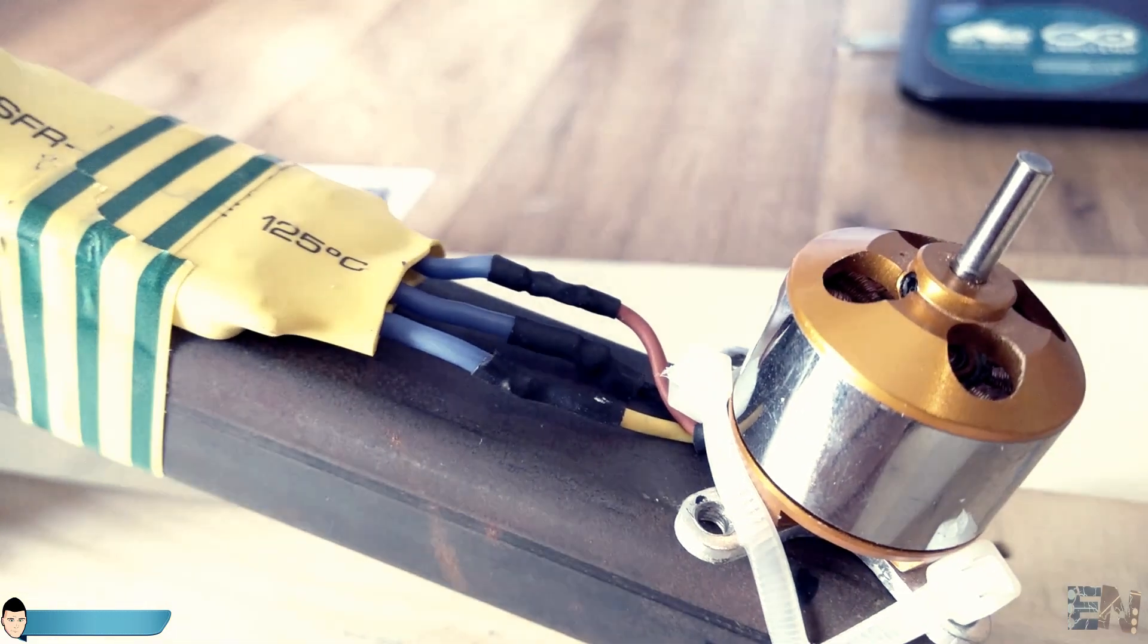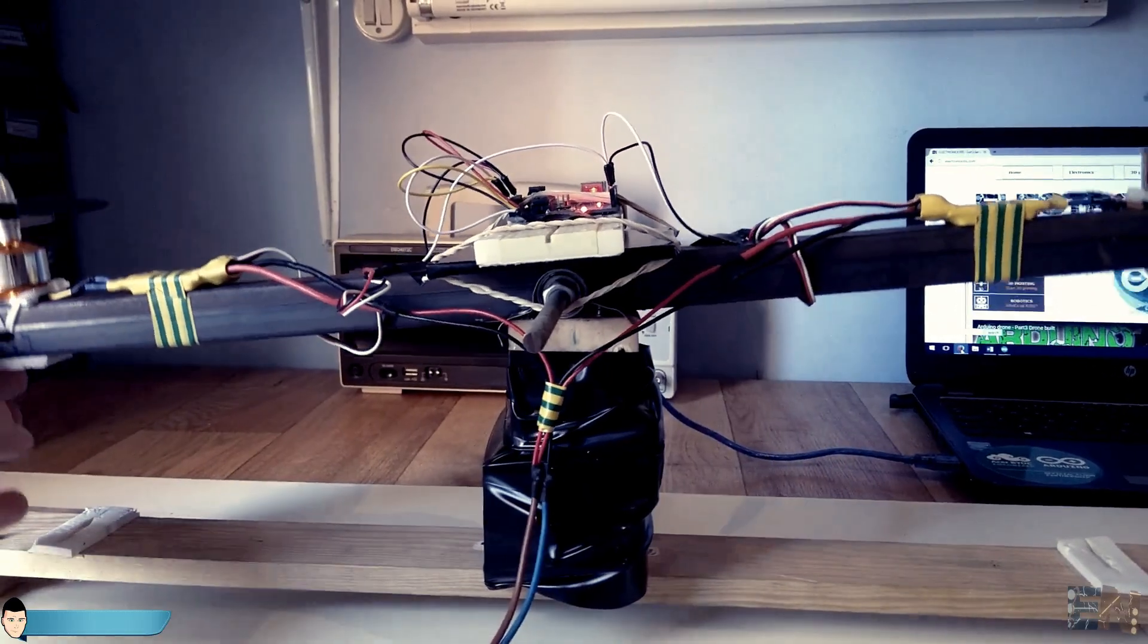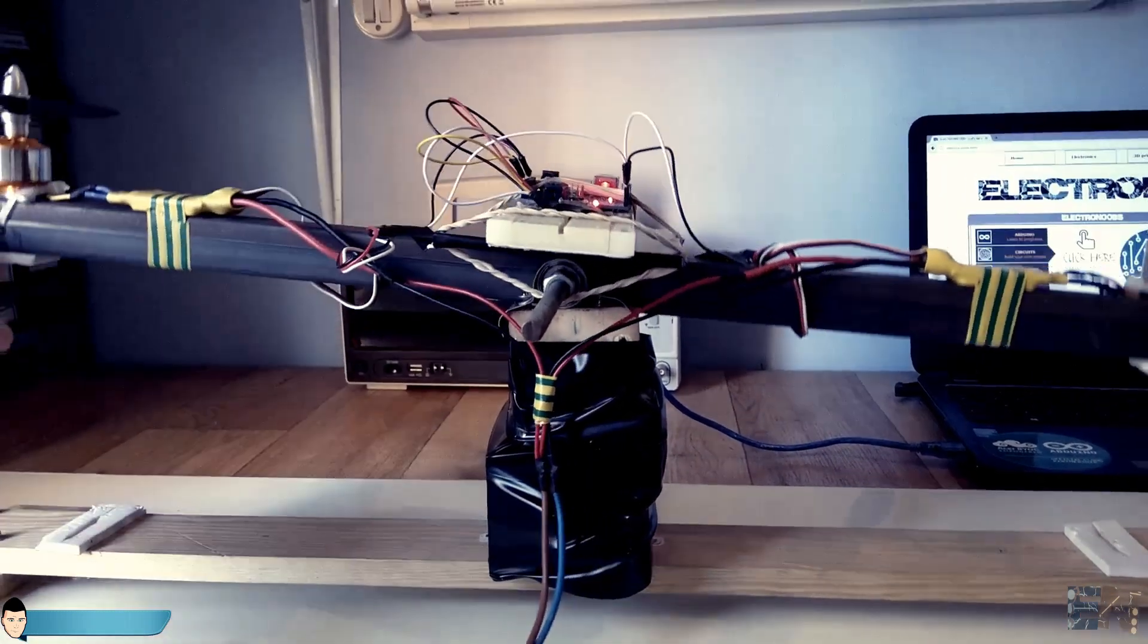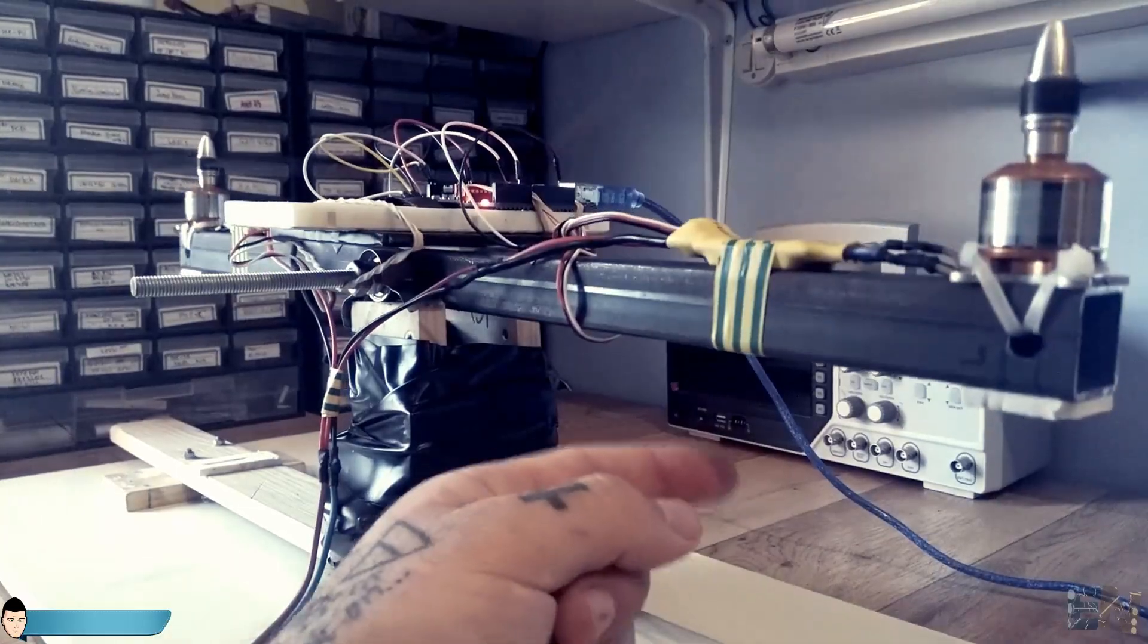These brushless motors are very powerful and any small change of power will spin the metal bar to the left or to the right. We need a fast and accurate control of the angle.